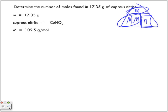So the molar mass, I hope you got this, 109.5 grams per mole. We had one copper, one nitrogen, and two oxygen. What we did was we multiplied each one by their atomic mass to get the molar mass.